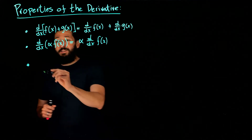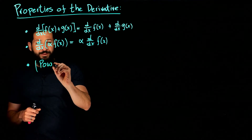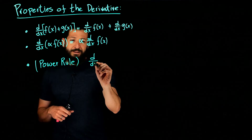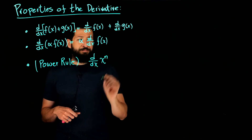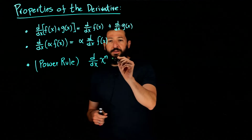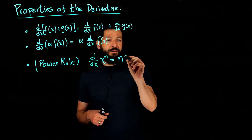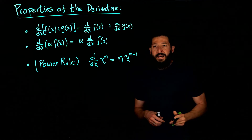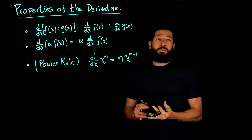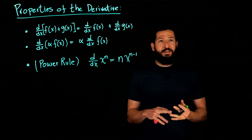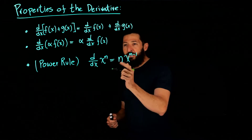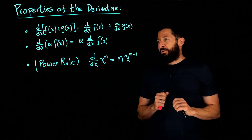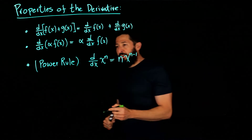The next property is called the power rule, which tells us how to take the derivative of a power of x. If you have x to the n, you drop that exponent, multiply it in front, copy the x, and subtract 1 from the exponent. This works for any n — rational, irrational, integer — and together these three properties let us take derivatives of any polynomial.